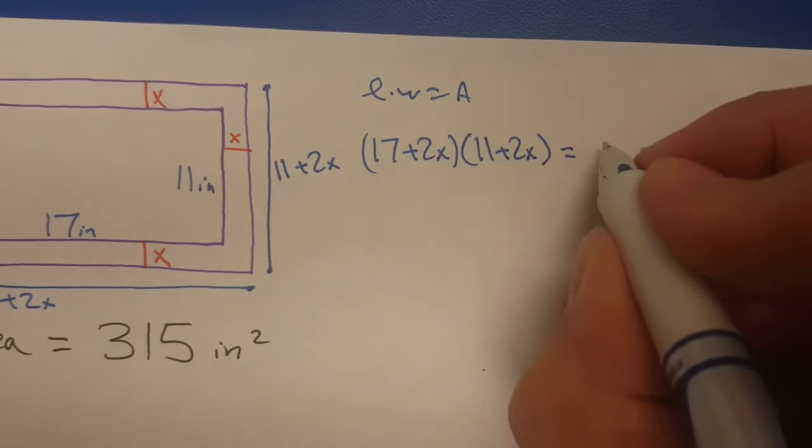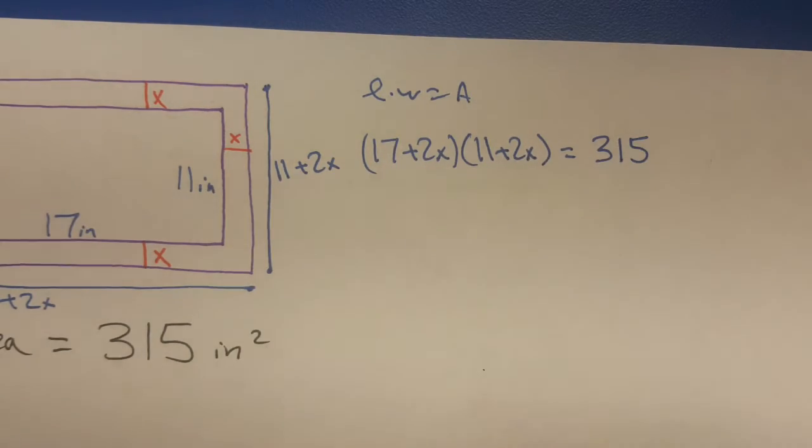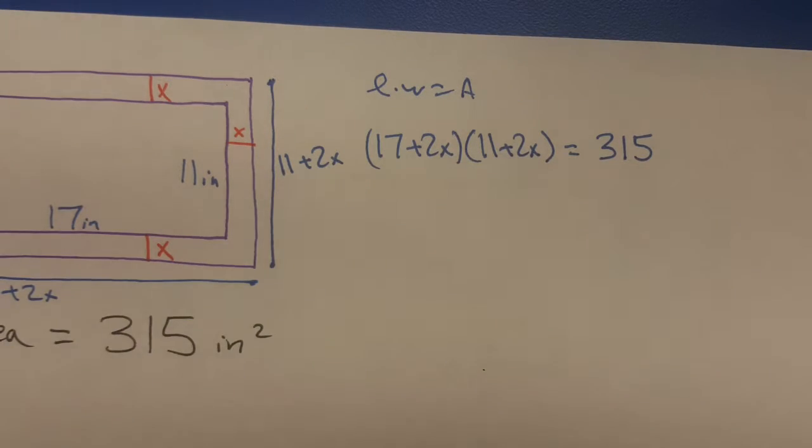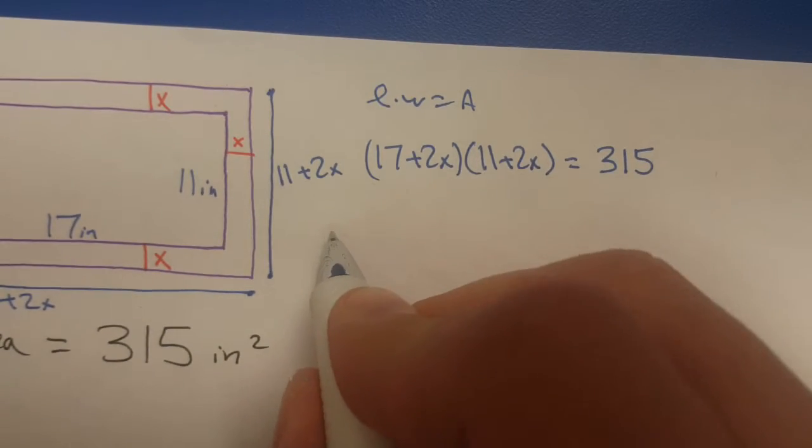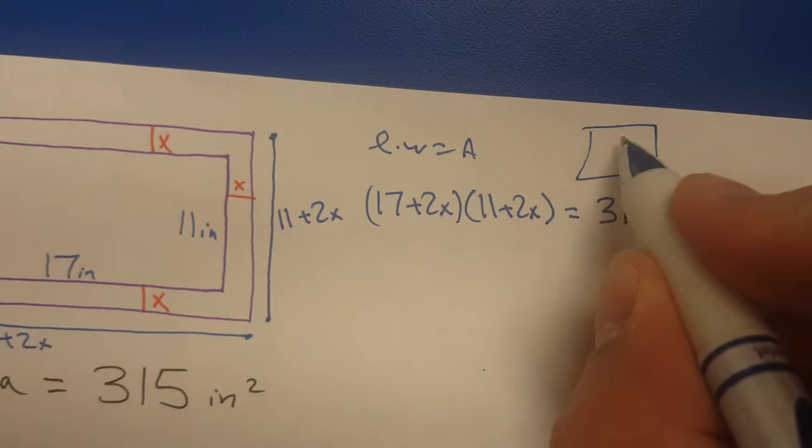From here I'm going to show you the long method and then the shortcut. This is where the path splits. We have to multiply this. What do you mean multiply it? You need to make a poly box. You take a binomial times a binomial, you got to make a poly box.